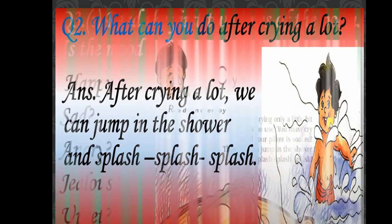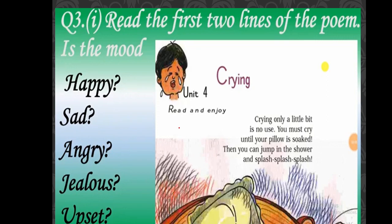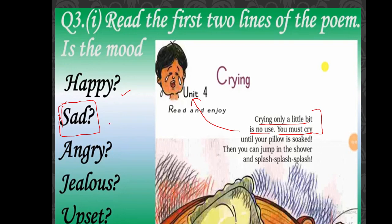Now come to the third question. Read the first two lines of the poem and identify the mood of the child. Here are the lines — come and read with me: 'Crying only a little bit is no use, you must cry a lot.' So the mood of this child is sad.